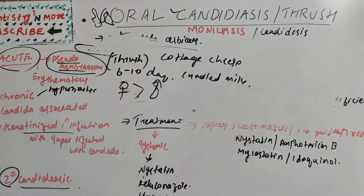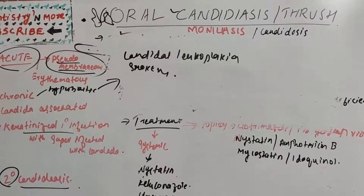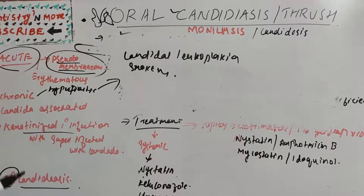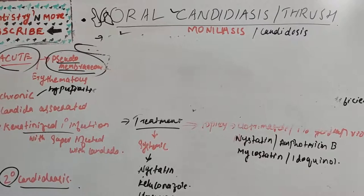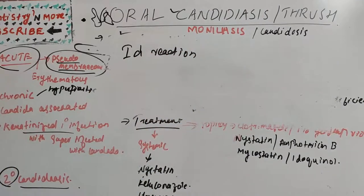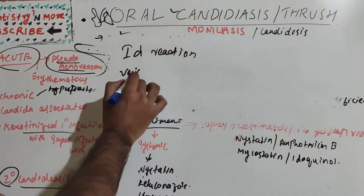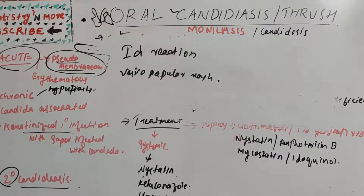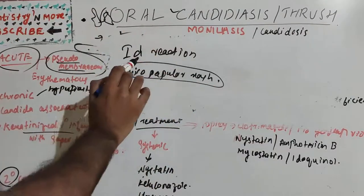Chronic hyperplastic leukoplakia can be diagnosed as a firm, white, leathery appearance that is difficult to rub off. Differential diagnosis includes lichen planus, hairy leukoplakia, and other bacterial infections. There is also a peculiar condition known as the ID reaction — a secondary response characterized by localized or generalized sterile vesicopapular rash, which is believed to be an allergic response to candida antigen.